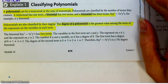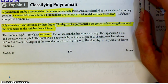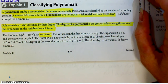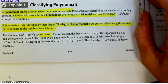I am now at the bottom of page 674. We're going to learn what polynomials are. A polynomial can be a monomial, or it can be the sum of monomials. Remember, you learned what a monomial was on page 673.